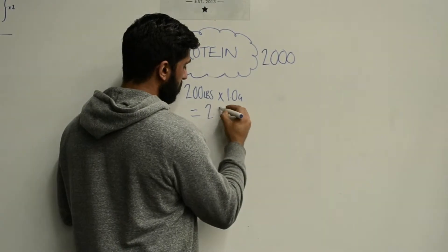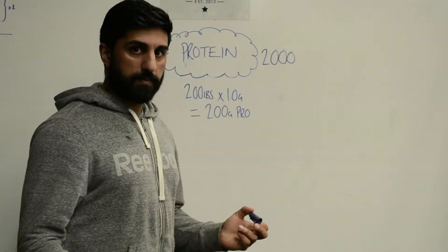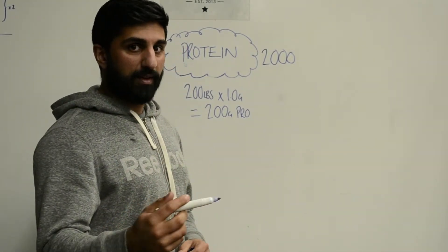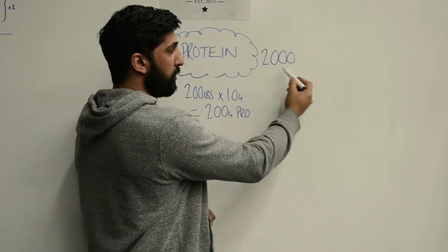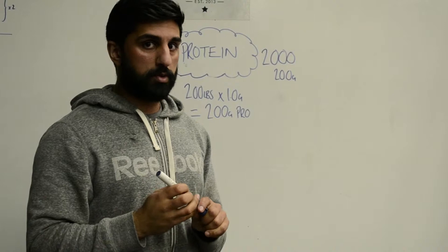That equals 200 grams of protein. So this 200 pound person who's completely inactive, no exercise, is going to eat 2,000 calories, so 200 grams of those calories are going to be protein.